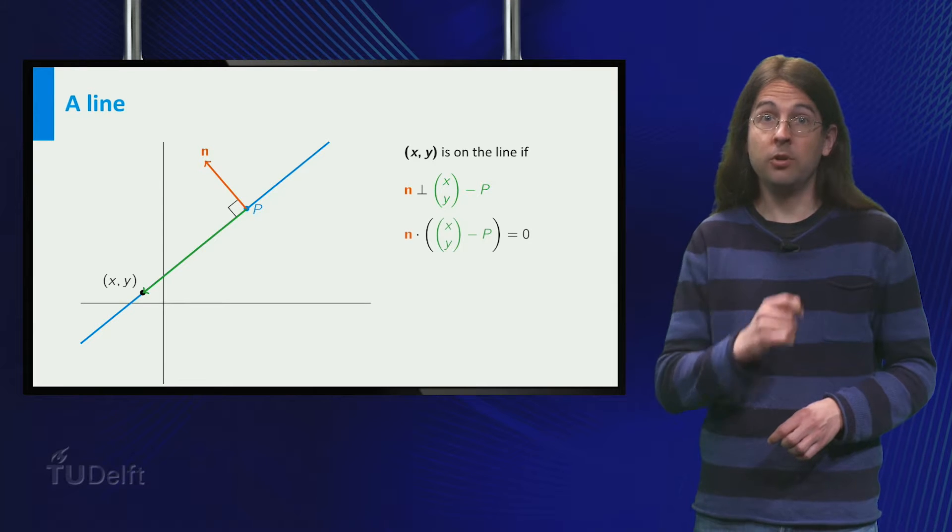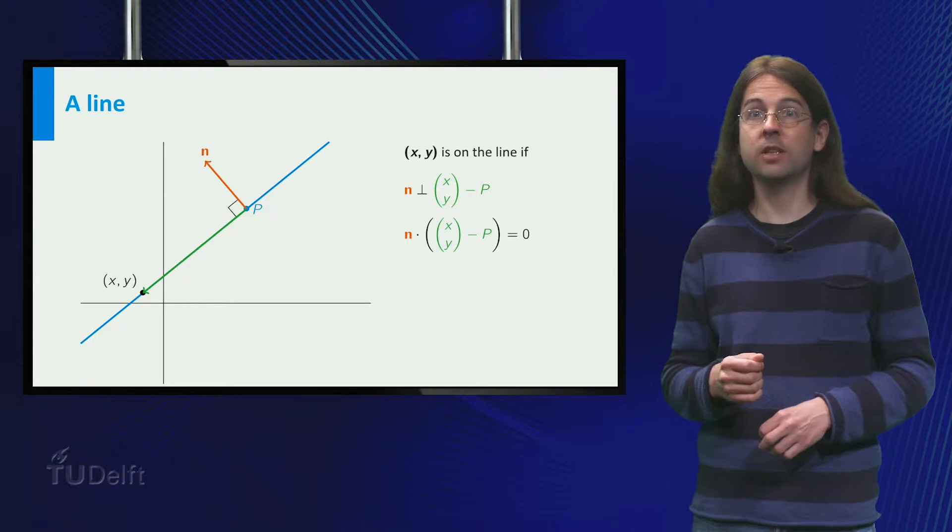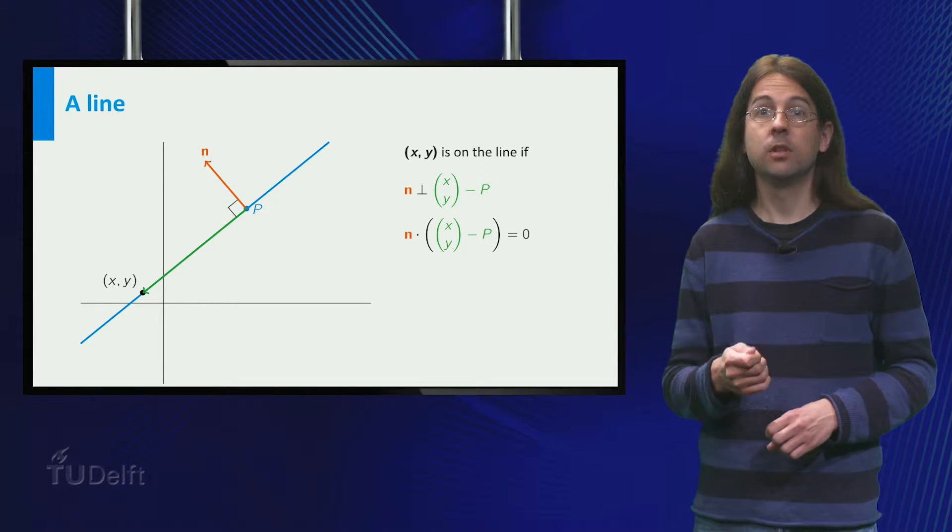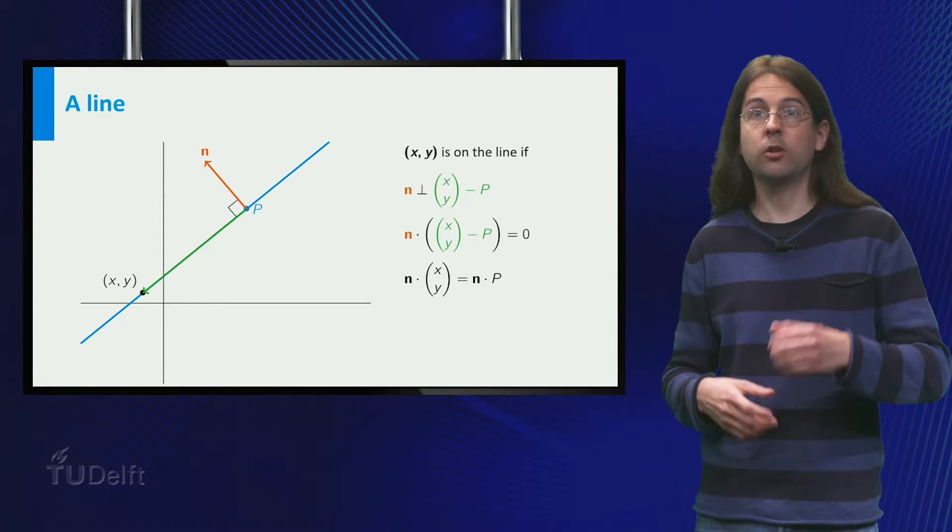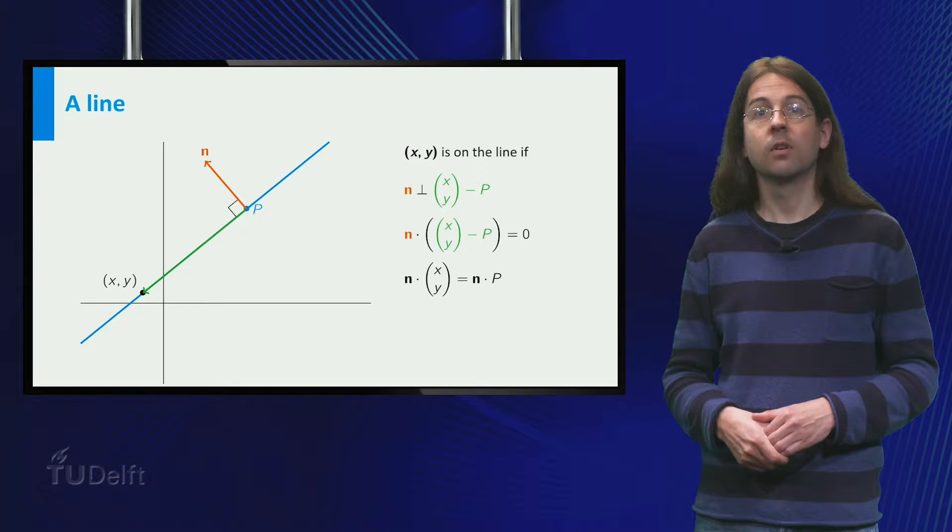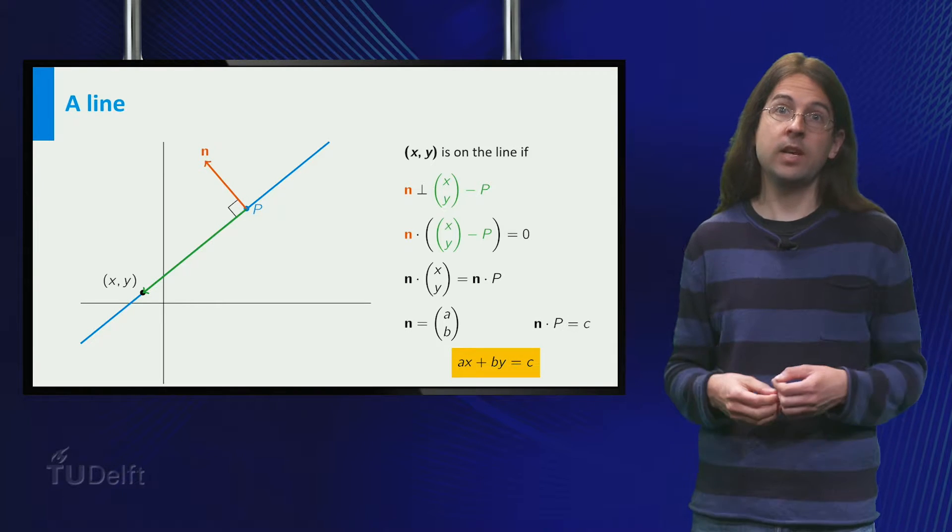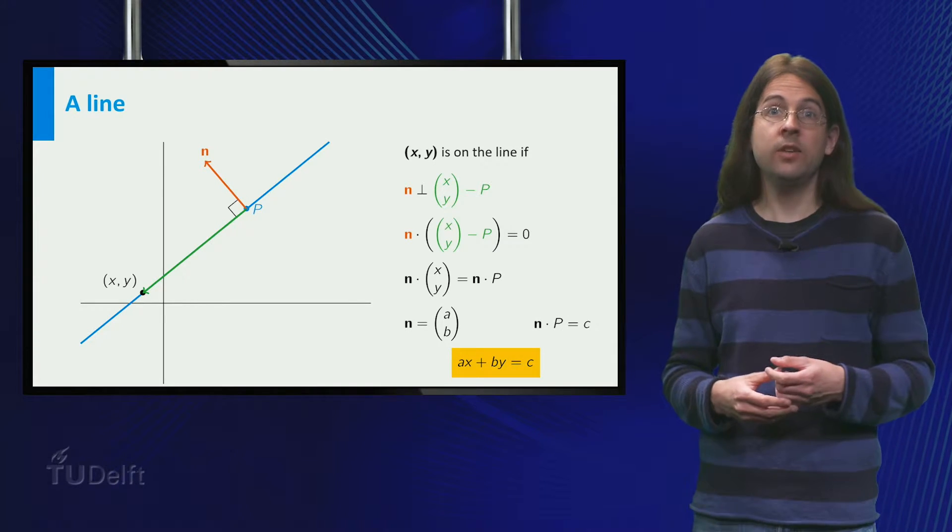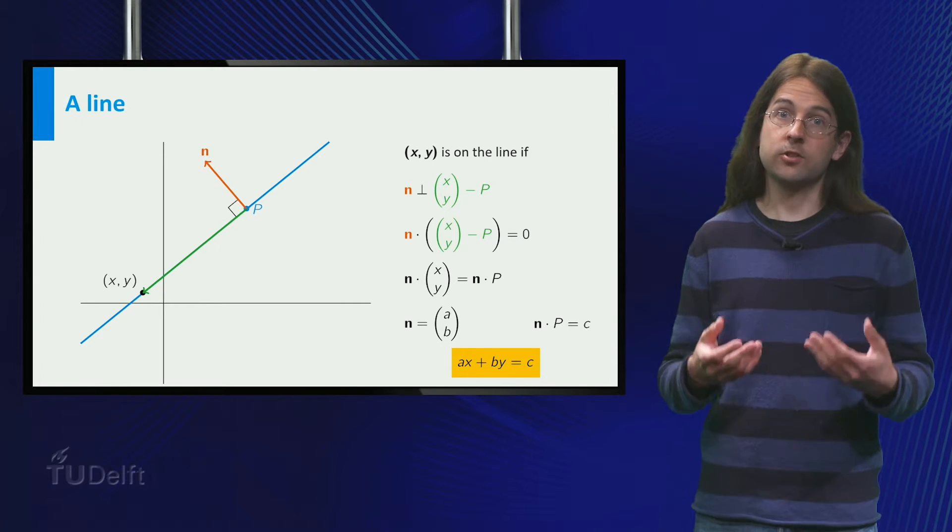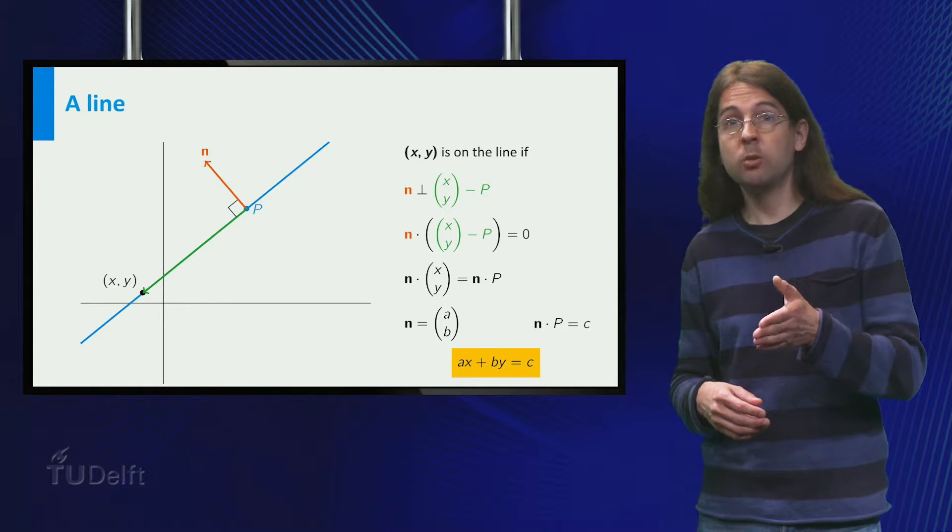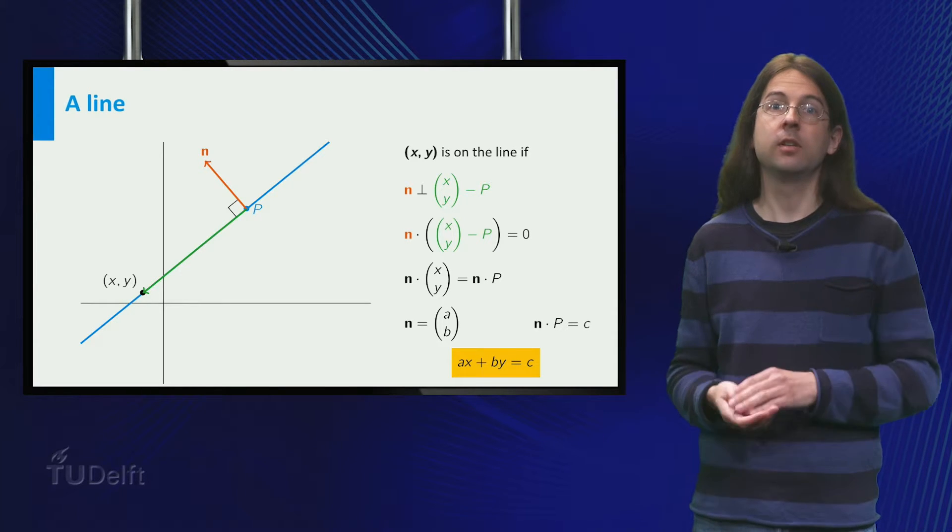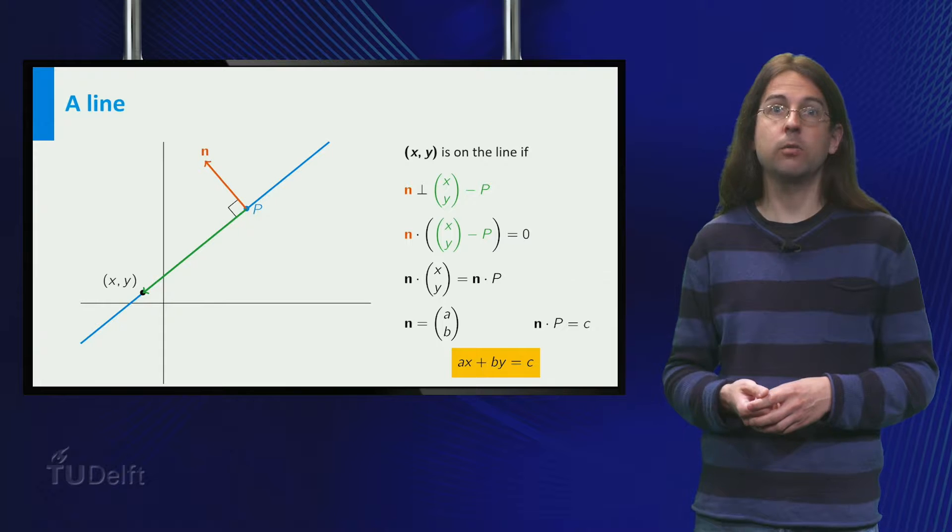This gives dot product of n of x, y minus p equals zero. So n dot x, y equals n dot p. Writing n is a, b and n dot p is c and expanding this equation gives a standard form for the line ax plus by equals n dot p equals c, for some fixed value of c.